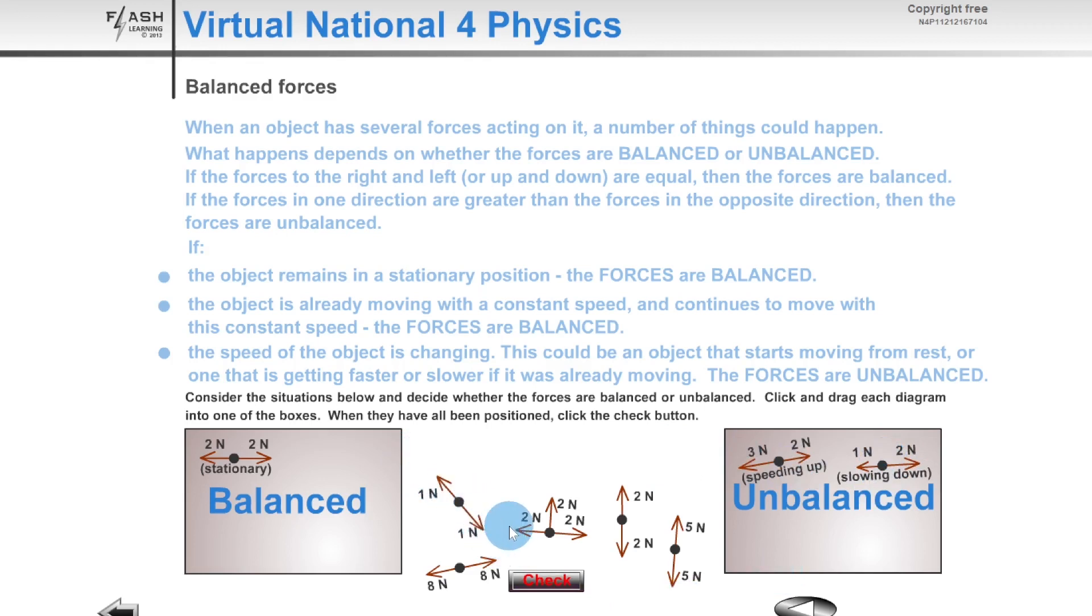We then have one newton up this way, one newton down this way, so they cancel each other out to give us a resultant force of zero newtons, so that is balanced there. We then have eight newtons that way, eight newtons that way—again balanced forces, a resultant force of zero newtons.